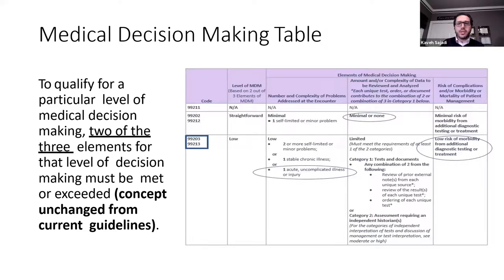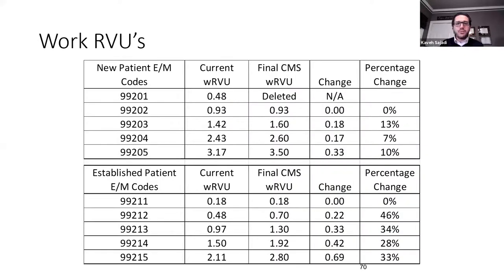To determine your level of service using medical decision making, you must have two of the three columns meet that level of service. The work RVUs for office visits have significantly increased — ranging from zero to 46% increase in reimbursement. As noted, this is based on budget neutrality, which means the increased reimbursement came from elsewhere — unfortunately some surgical codes have gone down, with hip and knee surgeons taking the brunt. In summary: for new and established visits, you don't need to re-document history and review of systems if a staff member recorded it, but you must document that you reviewed it. For established visits, only document what's changed, and the exam only needs to be medically appropriate.